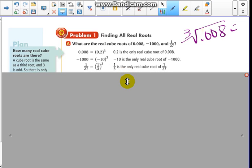One third is our only real cube root of 1 over 27, because 1 third times 1 third times 1 third equals 1 27th. That's when we just have one answer, when our index is odd.